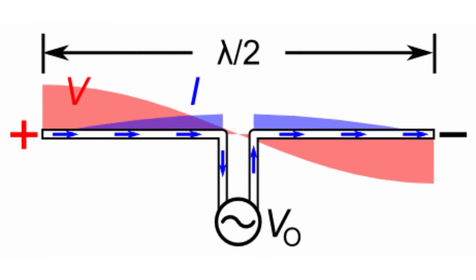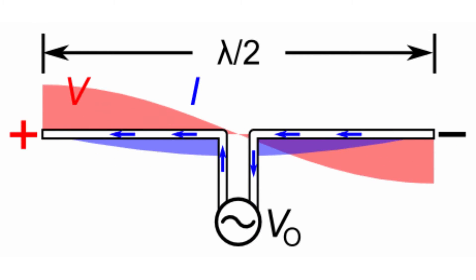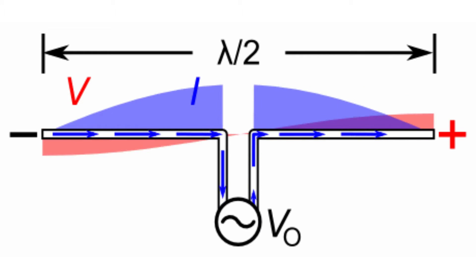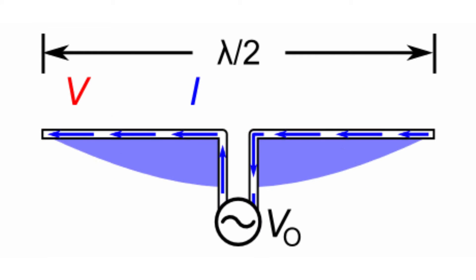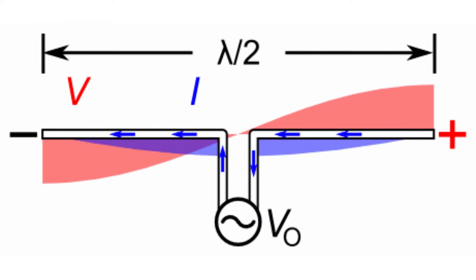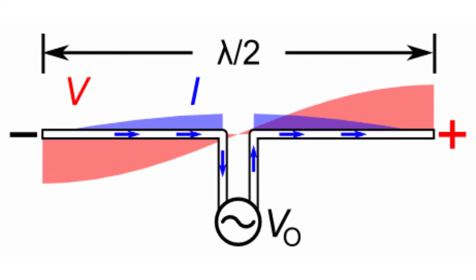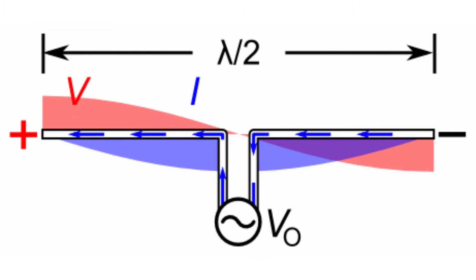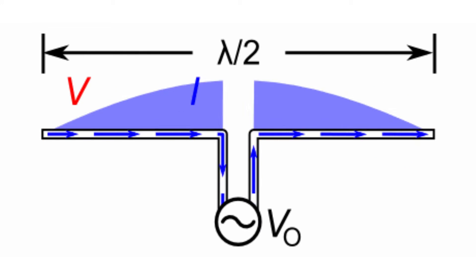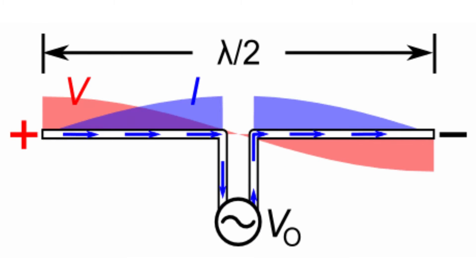The resonant frequency causes waves of current and voltage to bounce back and forth between the antenna's ends, creating a standing wave. Thus, these antennas function best at frequencies near their resonant frequency. The half-wave dipole is probably the most widely used antenna element.